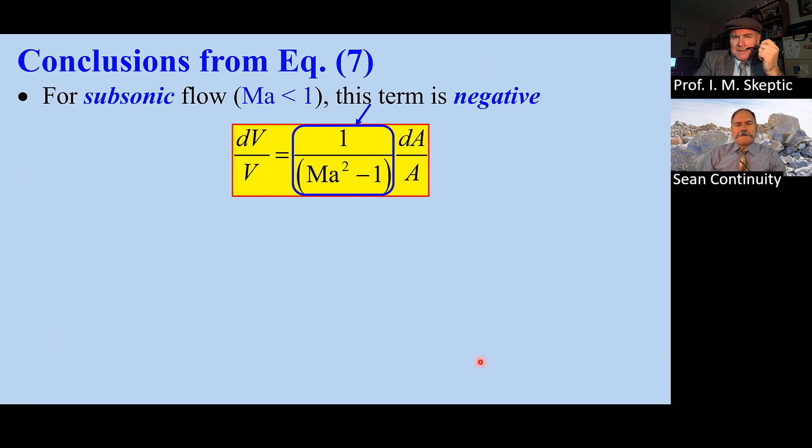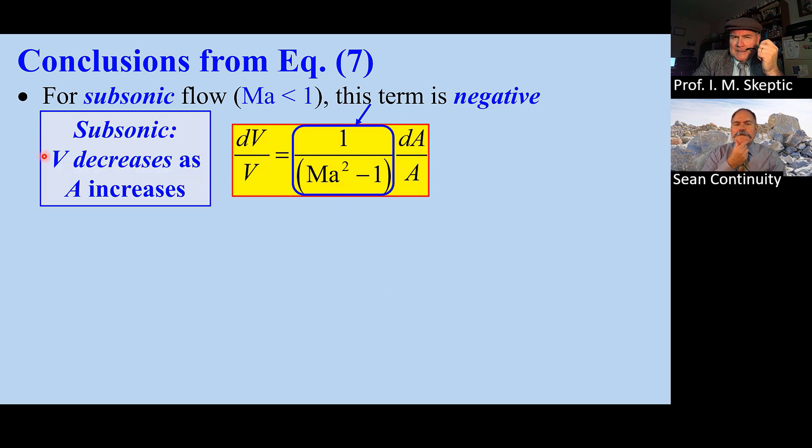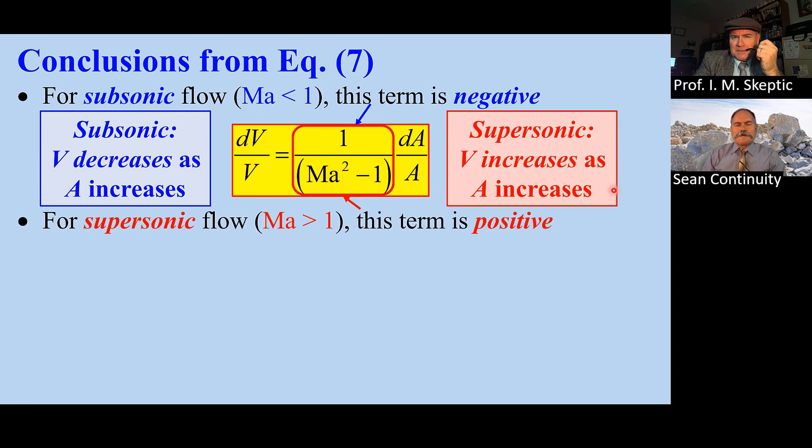Here's equation 7 again. When the flow is subsonic, Ma < 1, this term is negative. So for subsonic flow, speed decreases as area increases. For supersonic flow, this term is greater than 1, so speed increases as A increases.